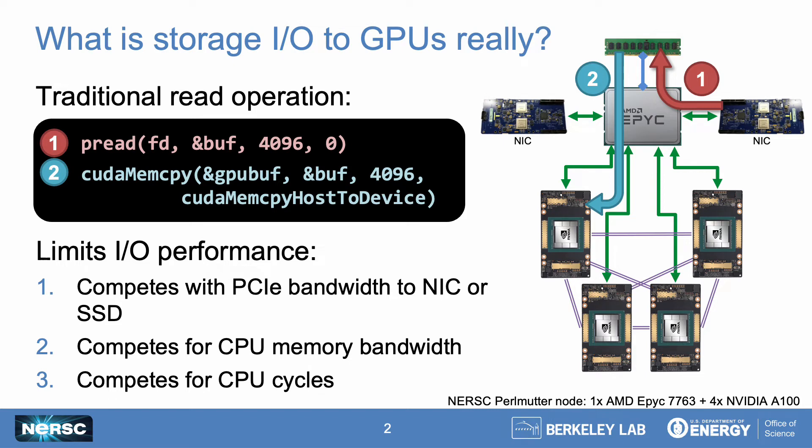The traditional way of reading data from a file system to be processed on a GPU is a two-step process. First, you read data from the file system into CPU memory, and second, you move that data from CPU memory to GPU memory using CUDA memcopy, HIP memcopy, or the appropriate OpenMP pragmas.